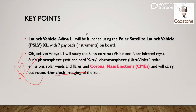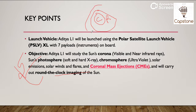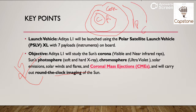Toh agar yahan par hum baat karein, toh humein sun ka thoda sa structure samajh mein aana chahiye. Agar sun ke interior ki baat karein, then it is made up of core, uske baad aata hai radiative zone, then the convective zone — ye toh sun ka interior hai: core, radiative zone, and convective zone. Sun ke atmosphere ki baat karein toh pehli layer hoti hai atmosphere ki, jise bola jata hai photosphere. The second layer is chromosphere, and outermost layer of sun is known as corona.